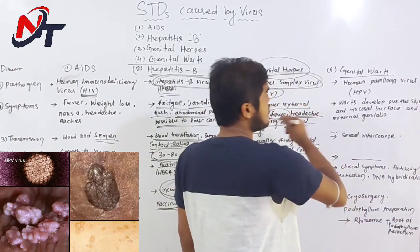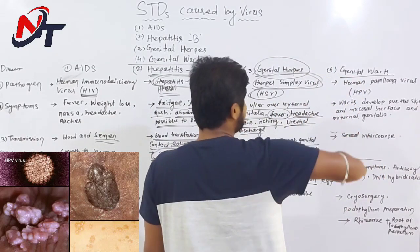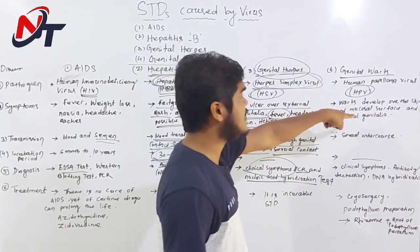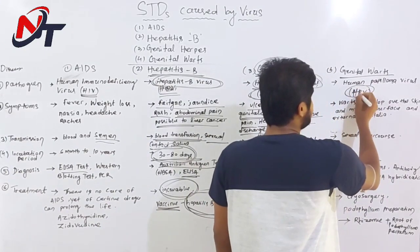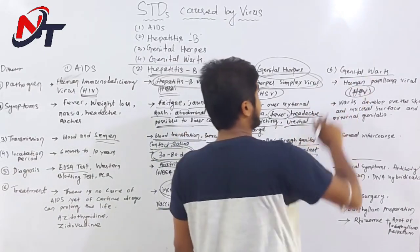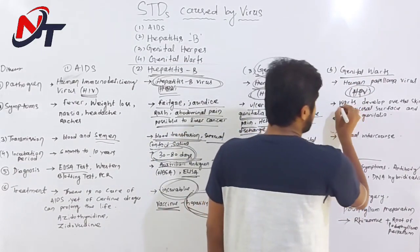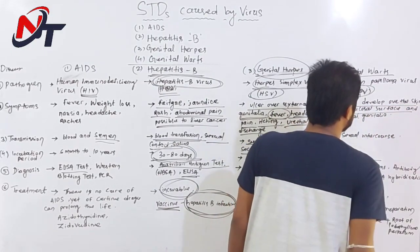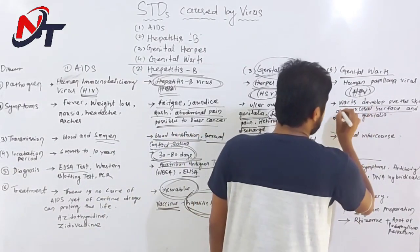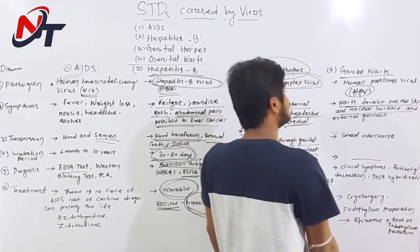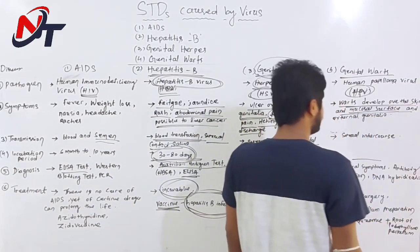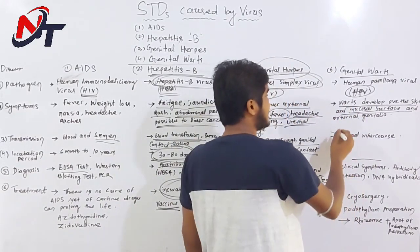Now look at the pathogen — this is HPV, the human papillomavirus. H for human, P for papilloma, V for virus. HPV causes genital warts. Warts develop over the skin, mucous surface, and external genitals.